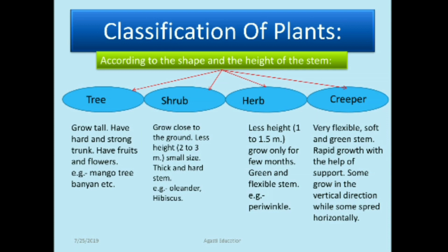Herbs have a height of one to 1.5 meters, grow for only a few months, and have a green, flexible stem — for example, periwinkle. To summarize: trees have a strong stem, shrubs have a thick but hard stem, and herbs have a flexible stem. Creepers, also called climbers, have a very flexible, soft, and green stem. They grow rapidly with the help of support, and some spread vertically while others spread horizontally.